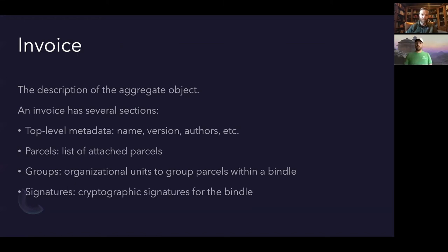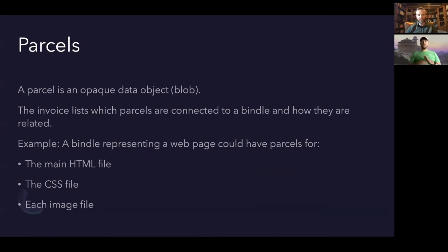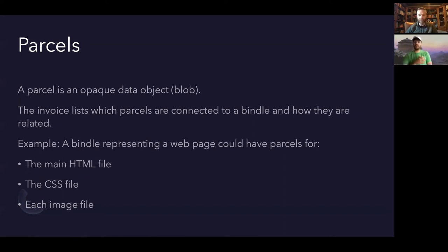As for a parcel, a parcel in and of itself is just data — it can be anything, just bytes of some kind. The invoice lists all those parcels and how they're connected using a SHA, and there's also other information like the content type, as you'd expect in most object storage systems. Because it can be any arbitrary type of data, a bindle could represent something like a web page, with a parcel for the HTML file, a parcel for the CSS file, a parcel for each image file, and a parcel for the JavaScript file.